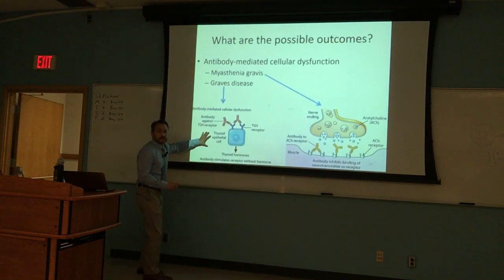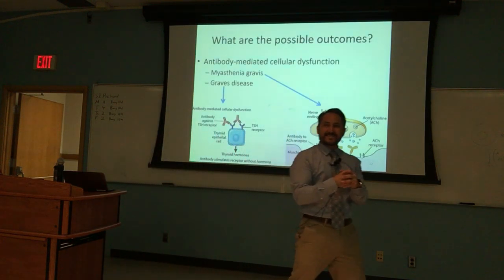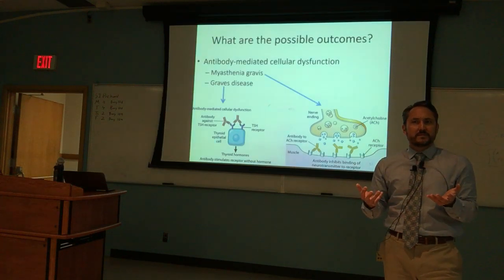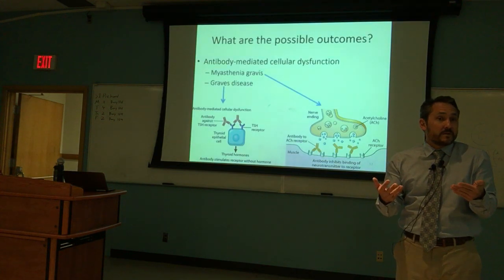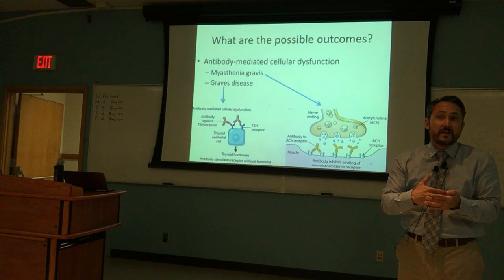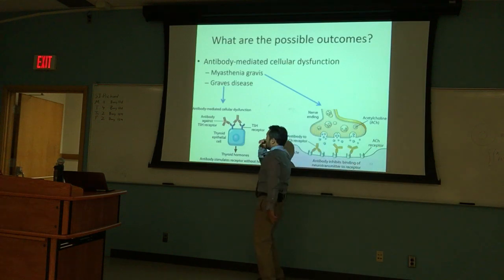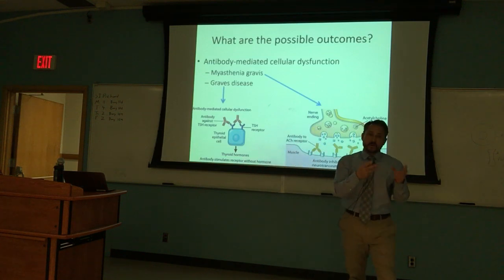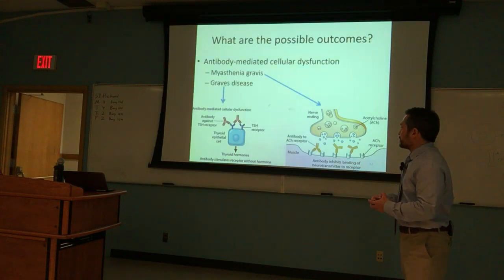A second type 2 example is Graves' disease. Same mechanism — a rogue B cell came out of the bone marrow, it never got reprogrammed, never triggered for apoptosis, and it's making TSH — thyroid-stimulating hormone — antibodies. These TSH antibodies bind to the TSH receptor on thyroid cells.